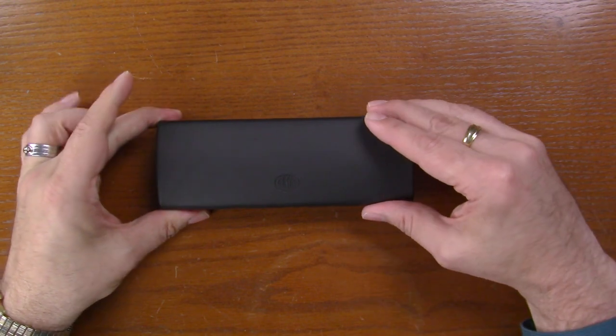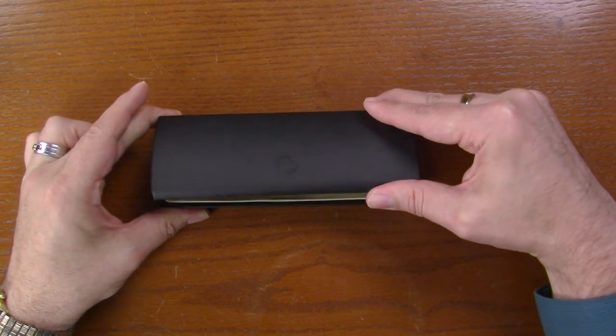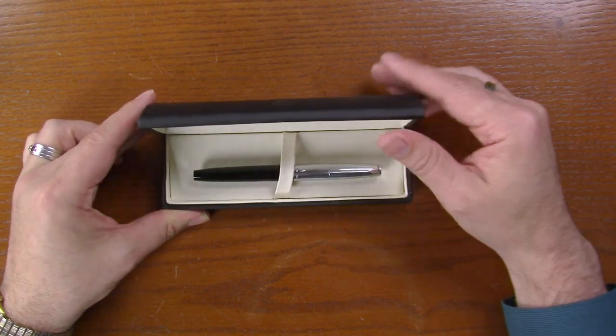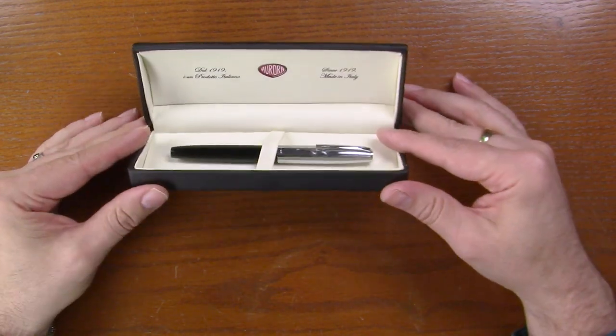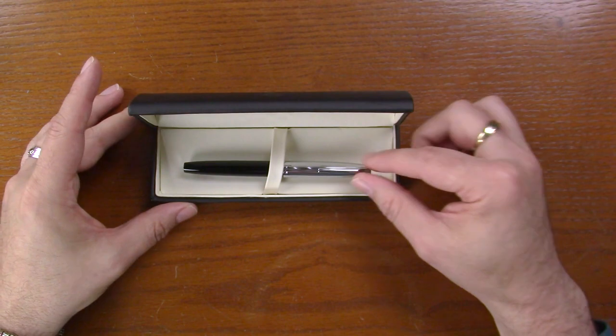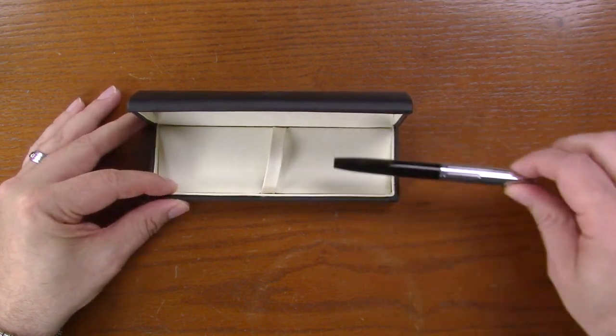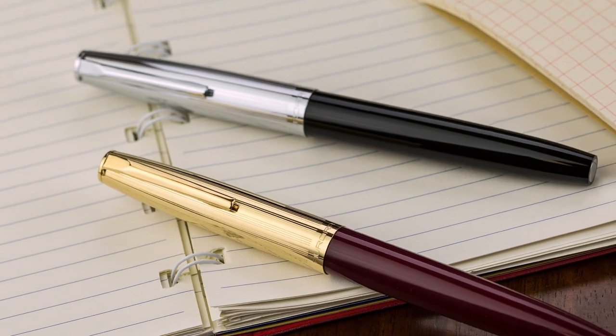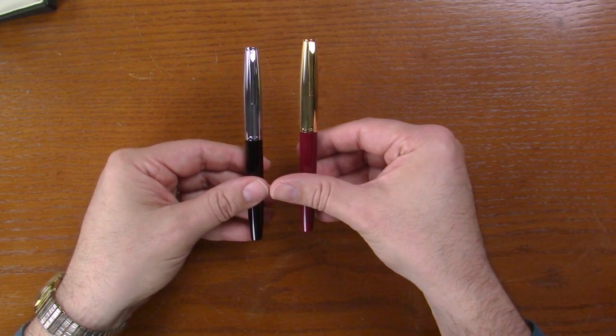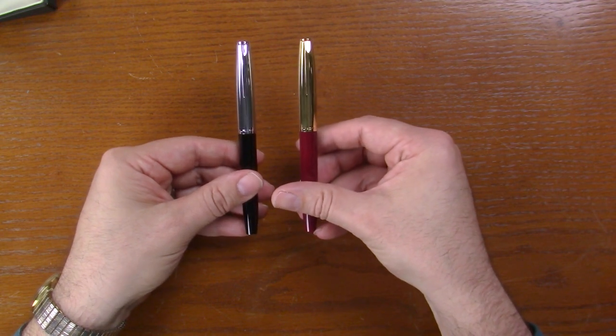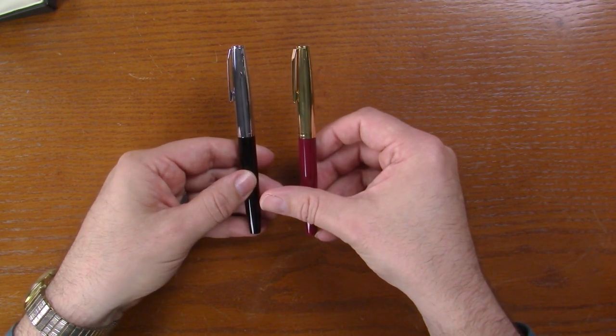So there are similarities between the two. Now it comes in just a standard Aurora leather box. Very nice box. I've got the black version here. There are two different colors. There is black with chrome and then burgundy with gold cap.